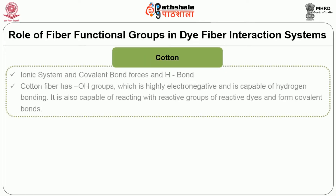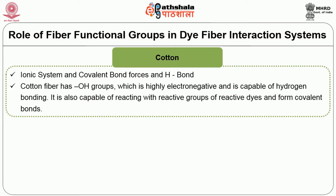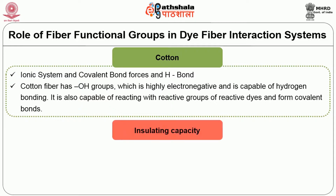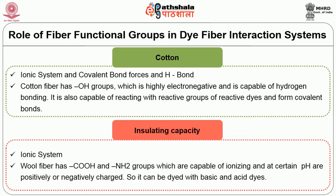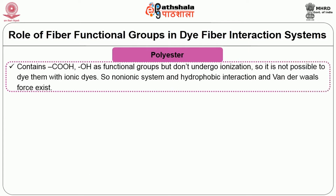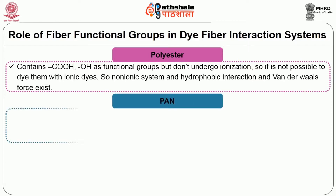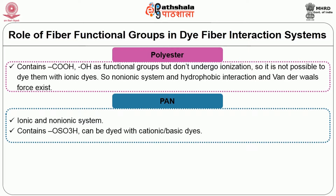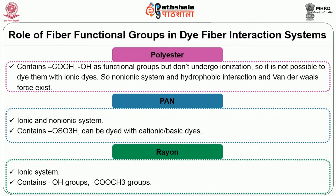Role of fiber functional groups in dye-fiber interaction systems. Cotton is a textile material where ionic system, covalent bond forces, and hydrogen bond formations are involved with any type of dye. Cotton fiber has hydroxyl groups which are highly electronegative and capable of hydrogen bonding, and also capable of reacting with reactive groups of reactive dyes to form covalent bonds. Wool fiber has carboxyl, hydroxyl, and amide groups capable of ionizing, and at certain pH are positively or negatively charged, so it can be dyed with basic or acid dyes. Polyester contains carboxyl or hydroxyl as functional groups but does not undergo ionization, so it cannot be dyed with ionic dyes — non-ionic system and hydrophobic interactions and van der Waals forces apply. Polyacrylonitrile is ionic and non-ionic, contains OSO3H, and can be dyed with cationic or basic dyes. Rayon is an ionic system containing hydroxyl and acetyl groups.